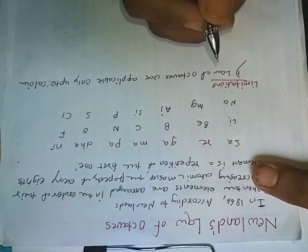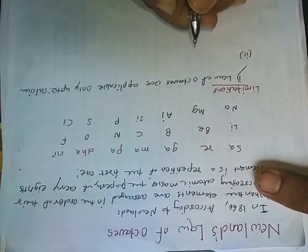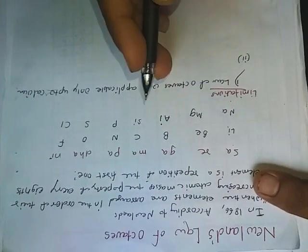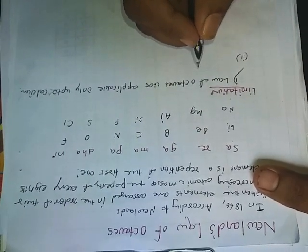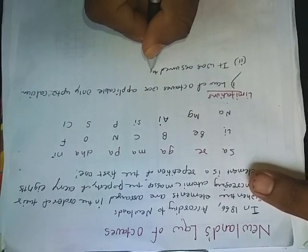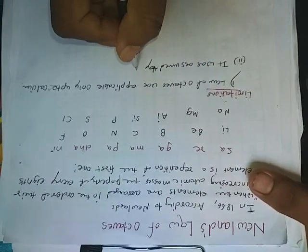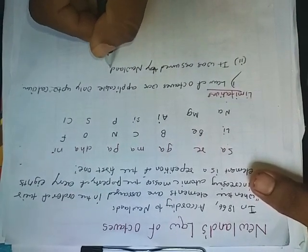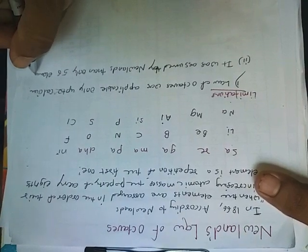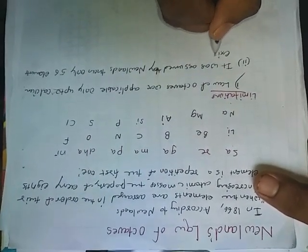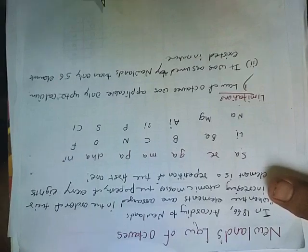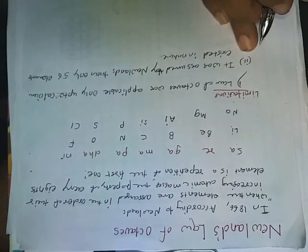Second, it was assumed by Newlands that only 56 elements existed in nature and no more elements would be discovered in the future. This is one of the important limitations.